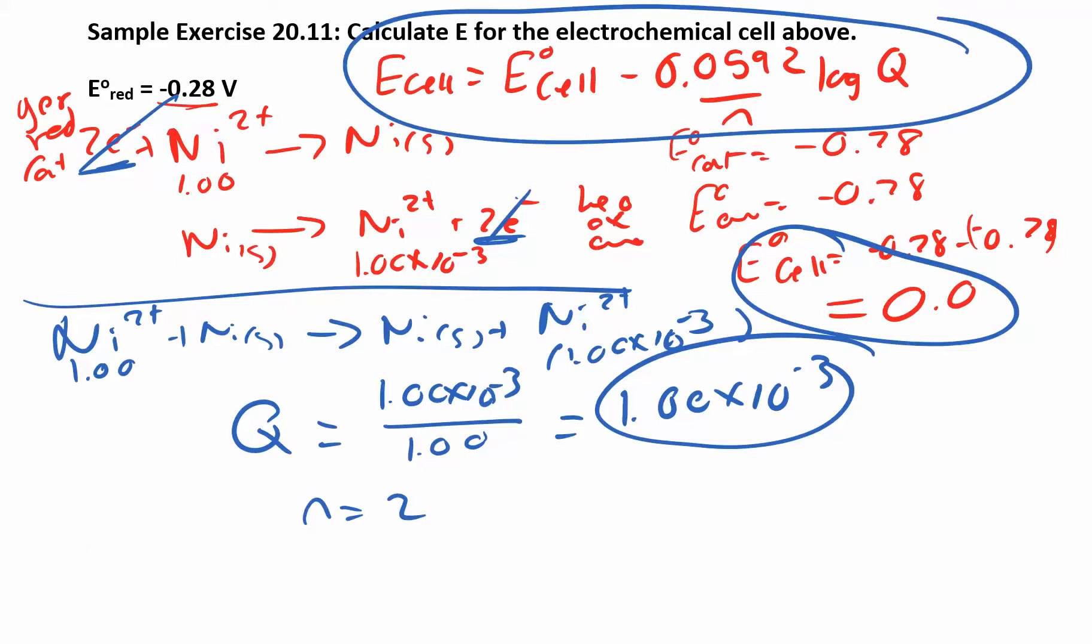And I get, Ecell is E°cell minus magic number 0.0592 over 2, right, because n is 2. n is 2 times the log of Q, which is 1 times 10 to the negative 3.